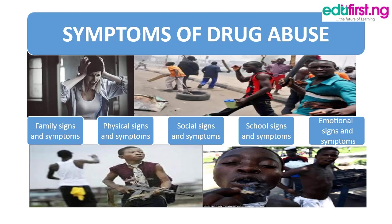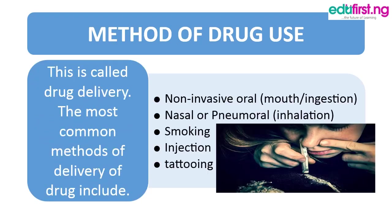Then we have school signs and symptoms. We also have emotional signs and symptoms, including talking to oneself, laughing to oneself, traces of insanity, and violent acts like stabbing and breaking bottles. These are all symptoms of drug abuse.